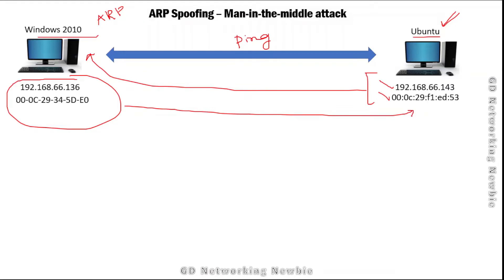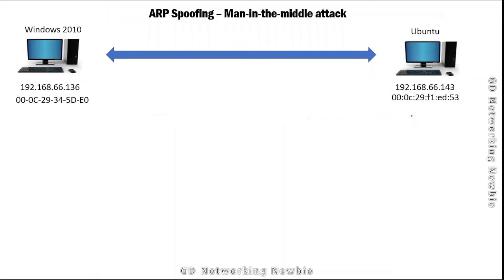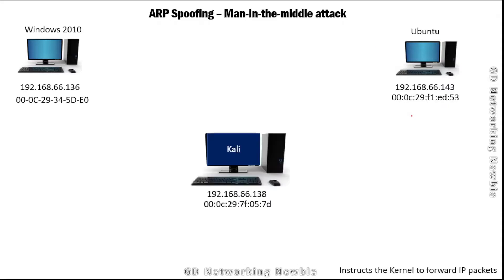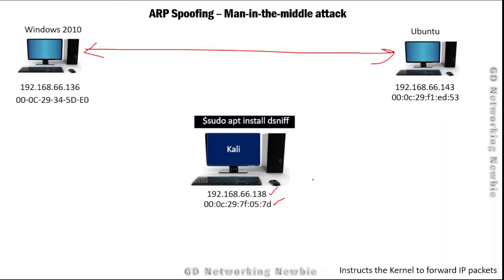Now in our ARP spoofing setup, we will introduce a third machine — Kali Linux — on the same network, with its own IP address and MAC address. While the other two are still communicating, we will install the ARP spoofing tool on Kali Linux. That tool is actually part of dsniff, so we will install dsniff first.